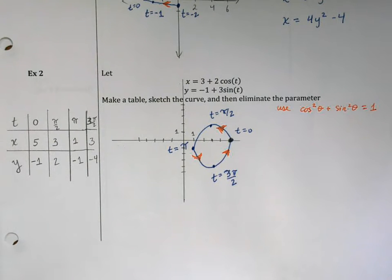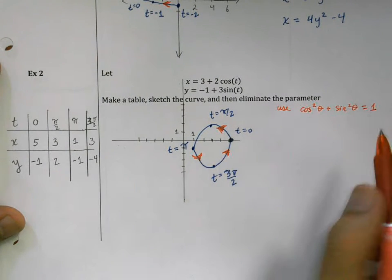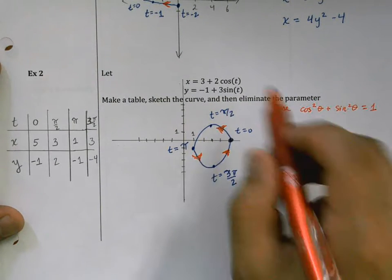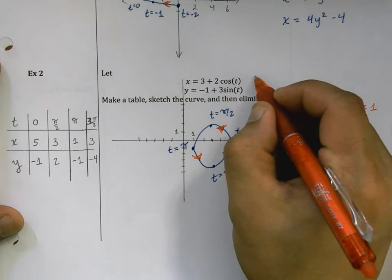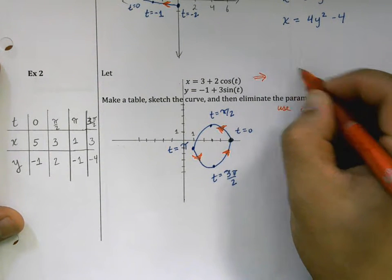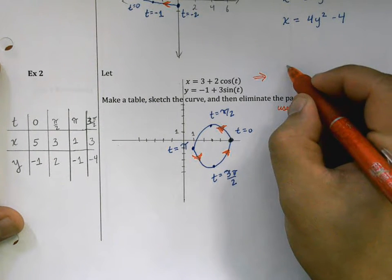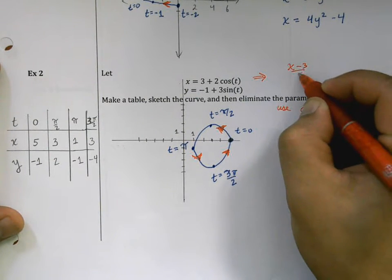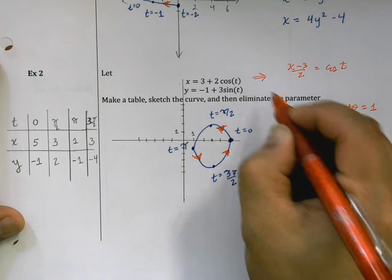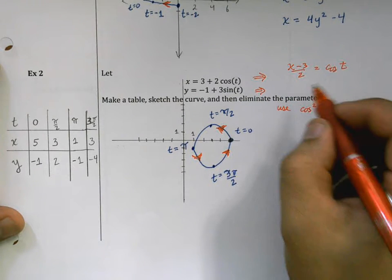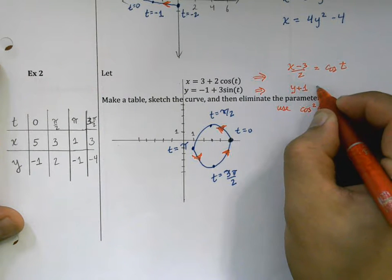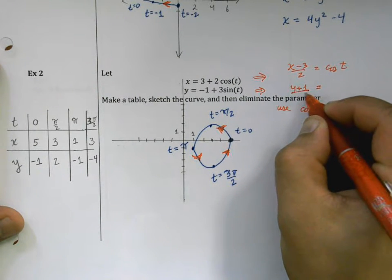This is a very old and classic trigonometric identity that we learn probably in algebra 2, pre-calc, definitely, maybe even geometry. To do this, we're going to isolate cosine and sine. The x function, cosine t equals (x - 3)/2, and down here, sine of t equals (y + 1)/3.